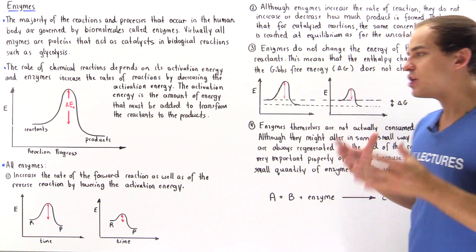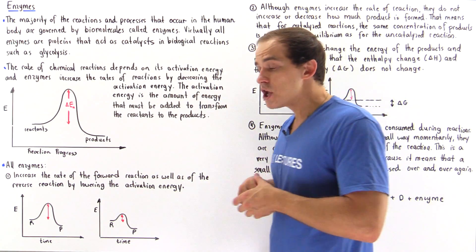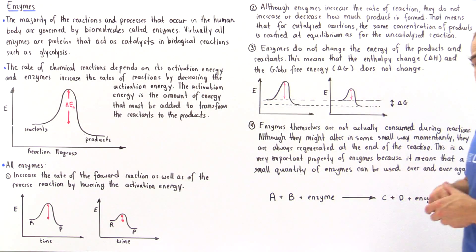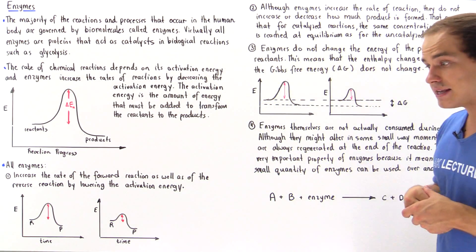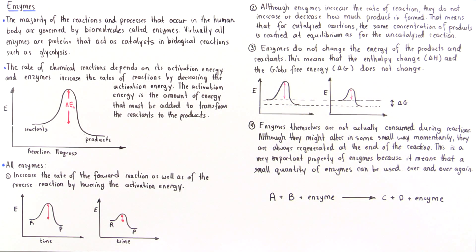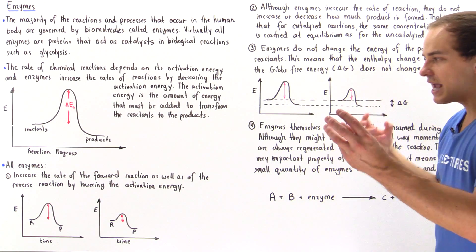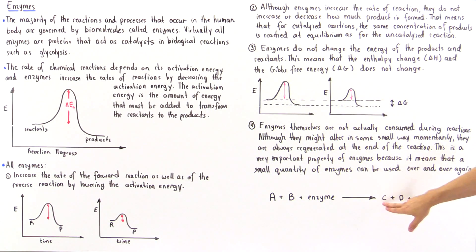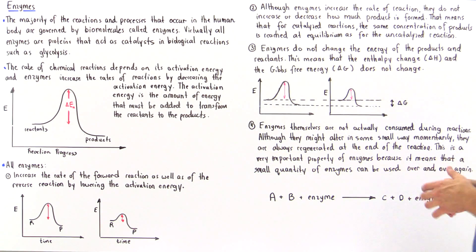The enzyme is always regenerated in the same form as it went into our reaction. This is a very important property of enzymes because it means a very small quantity of enzymes can be used to speed up many reactions at the same time. We do not have to use up our enzyme and create new enzymes because one enzyme can react with many different reactants. For example, if reactants A and B are placed with the enzyme, it decreases the activation energy to form products C and D, and the actual enzyme on the product side is exactly the same as on the reactant side — not used up or destroyed in any way.